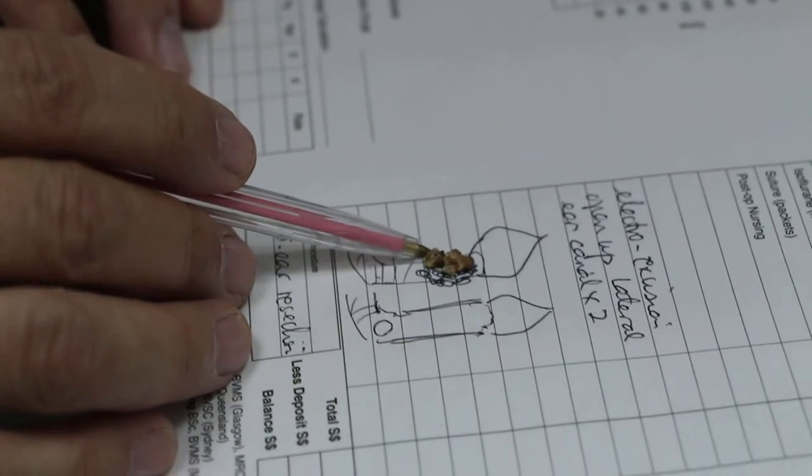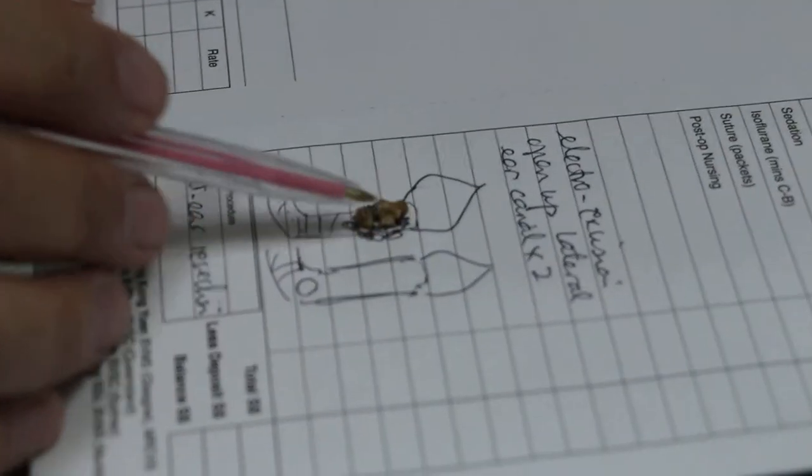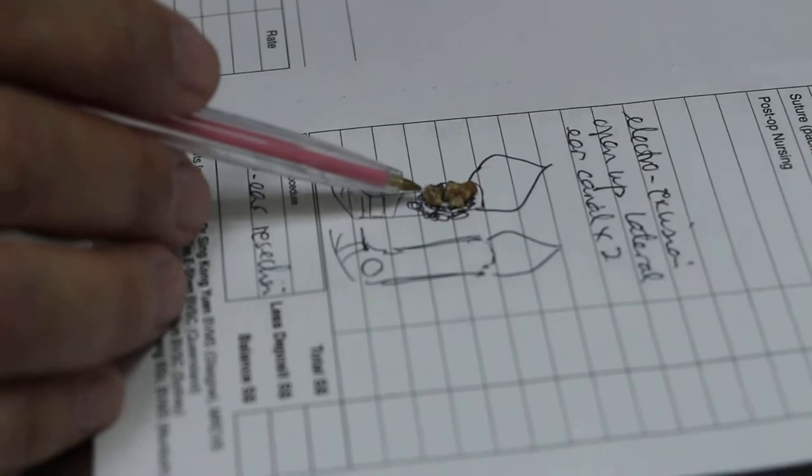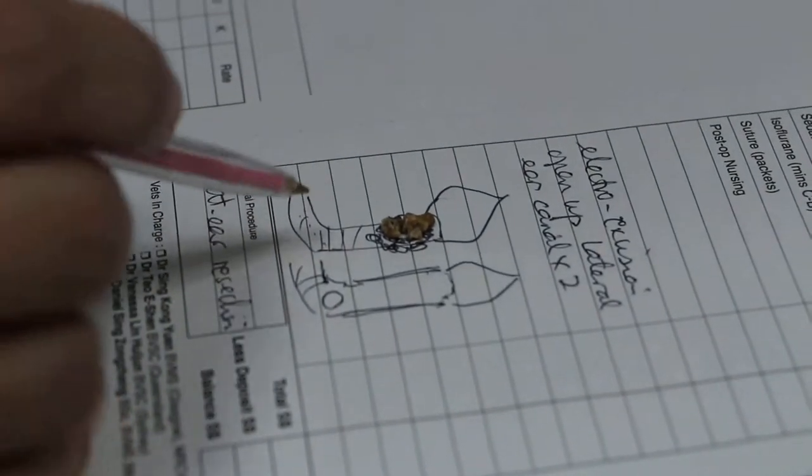The warts occupy the ear canal inside, so it keeps blocking obstruction. The hamster is very itchy, so it keeps on scratching.